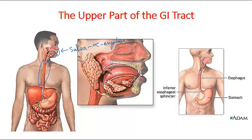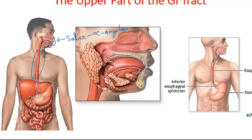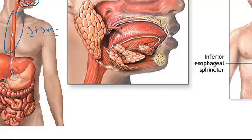The esophagus wall transitions from striated muscle at the top to smooth muscle as it progresses downward. The esophagus contains both striated and smooth muscle, but the stomach is mostly composed of smooth muscle. When food enters the stomach, chemical digestion takes place — primarily for proteins — along with a small amount of mechanical digestion.